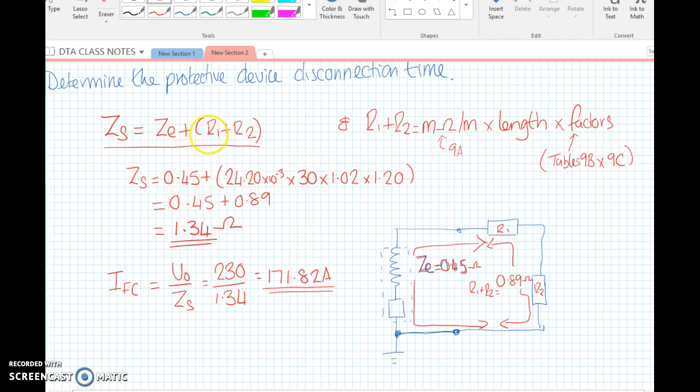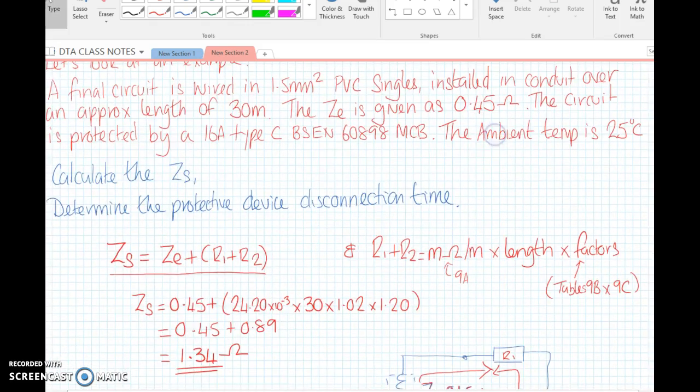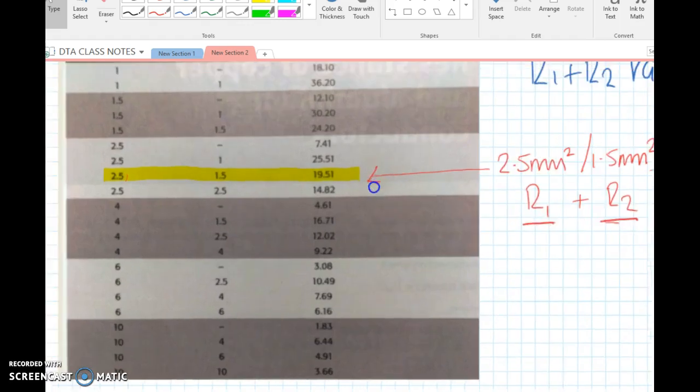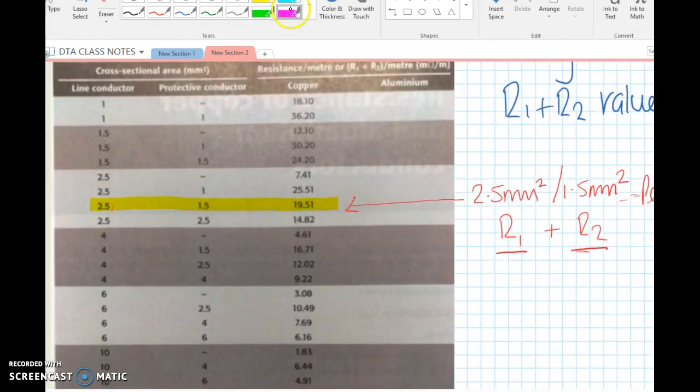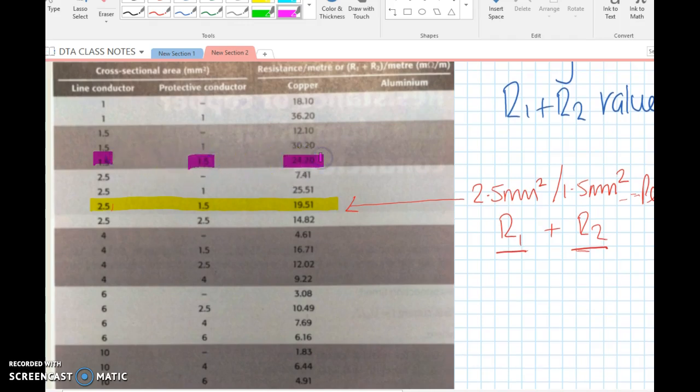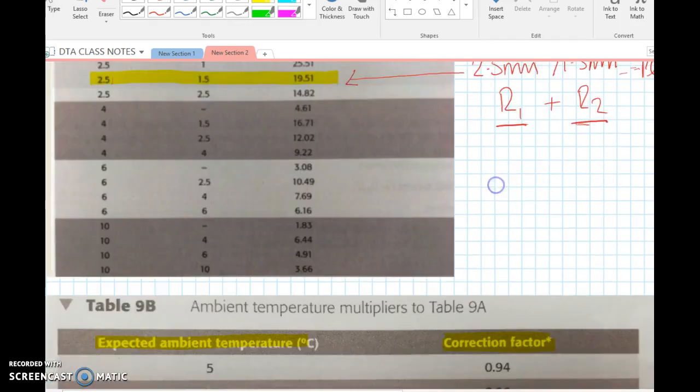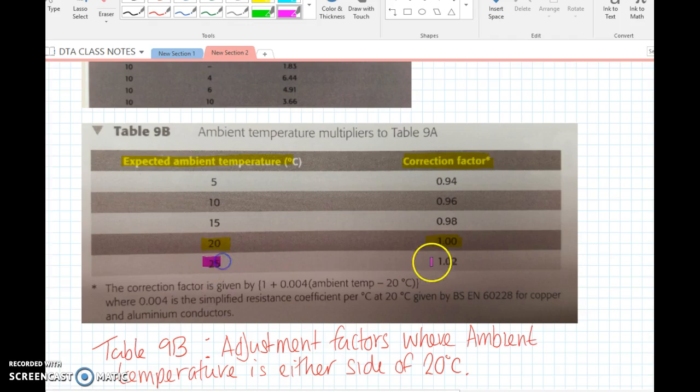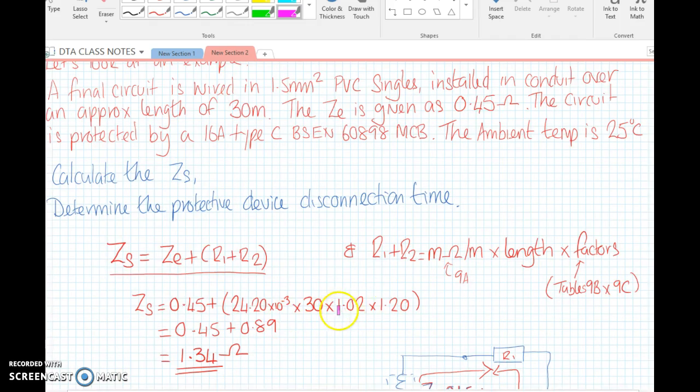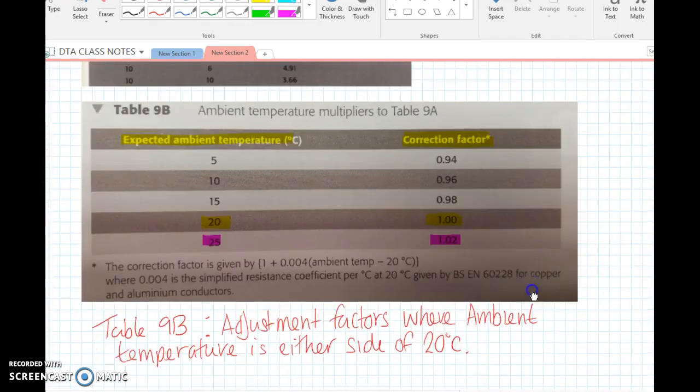Our external impedance is 0.45 ohms, and our R1 R2, well it's a 1.5 cable. A 1.5, 1.5 has a resistance of 24.2 milliohms per meter, so we'll drop that in there: 24.2 times 10 to the minus 3 ohms. Now let's look at the other factors. The ambient temperature of the brief gave it at 25 degrees, so we're going to multiply it by 1.02, that increases the resistance ever so slightly.